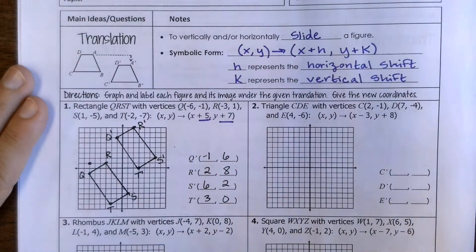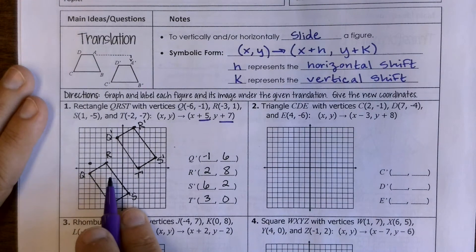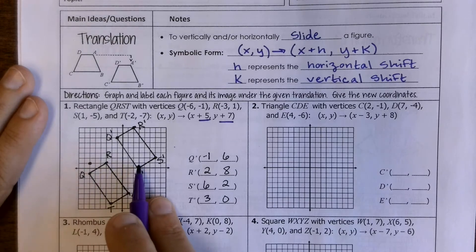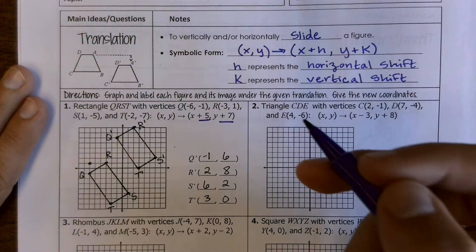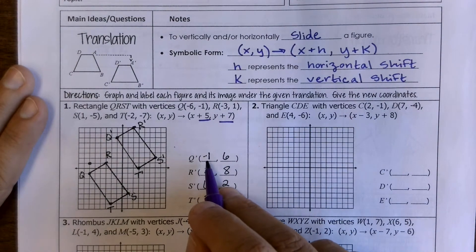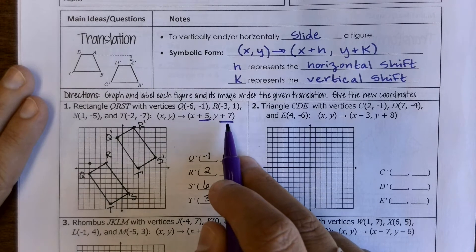And then with your y since we're adding 7, we've got q is not only going to be 5 to the right but then up 7, r is 5 to the right up 7, t is 5 to the right up 7, 5 to the right up 7. We can also see with the ordered pairs that this literally adds 5 to the x's and add 7 to the y's.